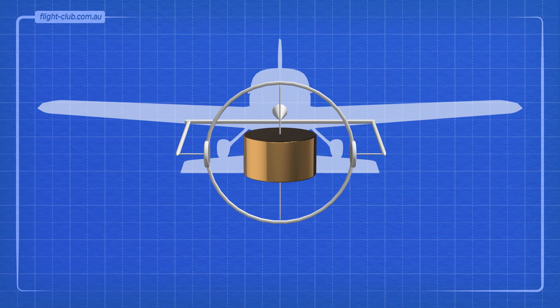A gimbal is attached to the aeroplane and able to freely rotate around its axis. Connected to an artificial horizon display, it can show the aeroplane's attitude to the pilot.